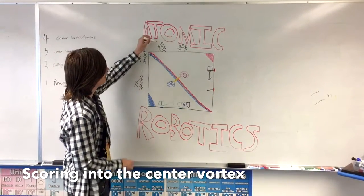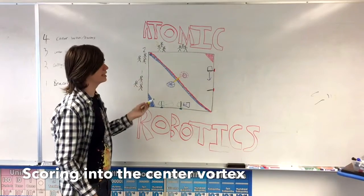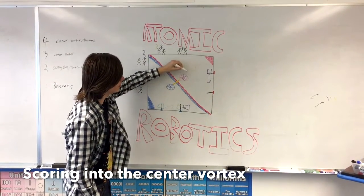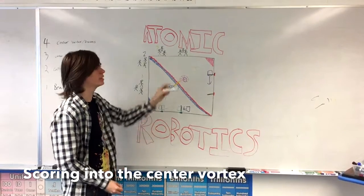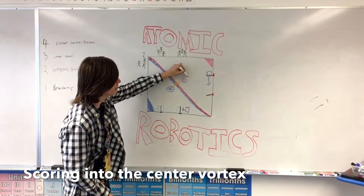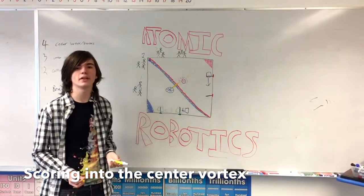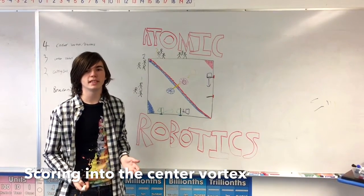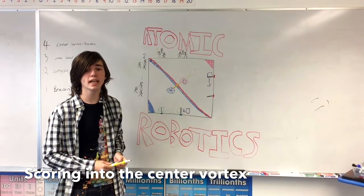So group three up here, all they want to do is go and sit right around in this area and keep grabbing particles and scoring them back into the center vortex. You get five points per particle scored in the center vortex, and most mechanisms that we've seen don't have the fastest cycle time.